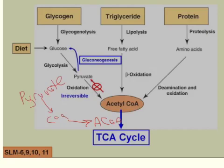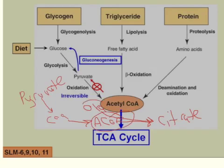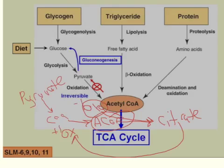Acetyl-CoA next combines with oxaloacetate to form citrate. Going through the TCA cycle, acetyl-CoA requires oxaloacetate. Whenever it goes back around and finishes the TCA cycle, it reforms oxaloacetate. If you subtract one and add one, the total oxaloacetate has not changed.